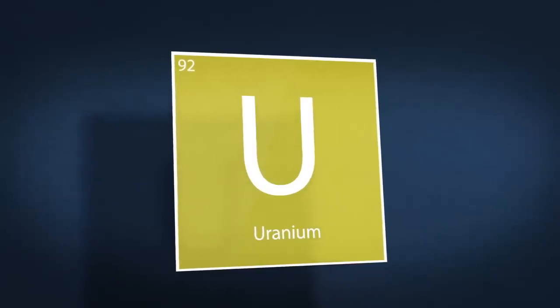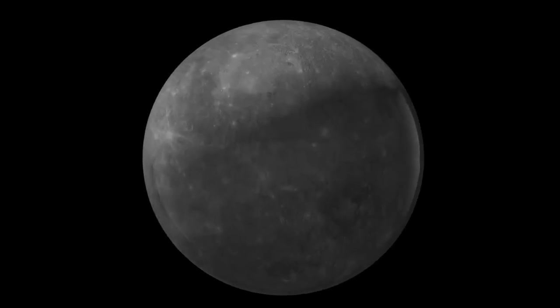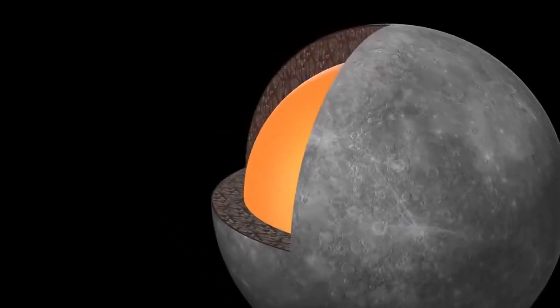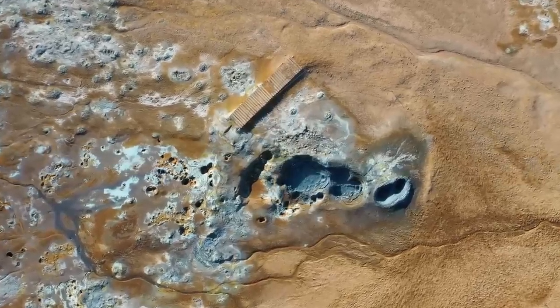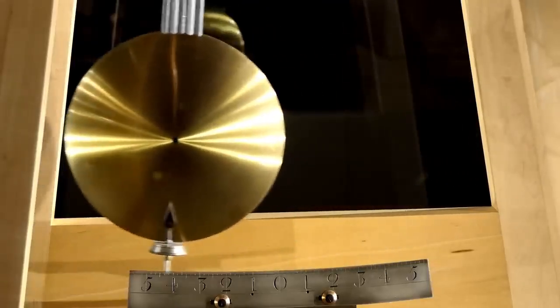Voyager was never meant to travel this far. It was never supposed to leave the solar system, never designed to confront the limits of dimensional stability or the possibility of artificial structures in interstellar space. And yet here it is, still transmitting, still revealing, still challenging the foundations of modern science.